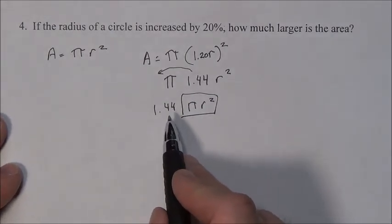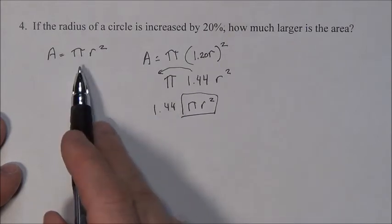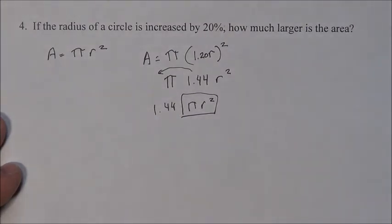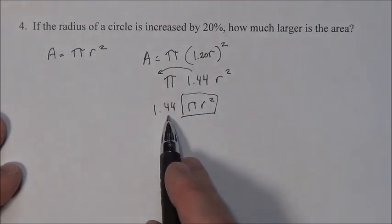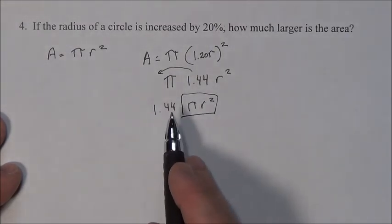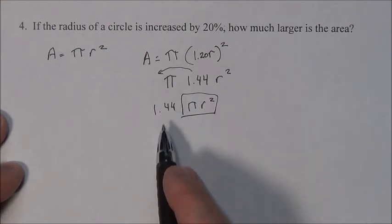In other words, it's going to be 44% larger than if you had just left it as is. So the answer: how much larger is the area? 44%, because this is 144%, which means it got 44% larger.